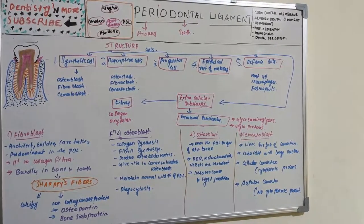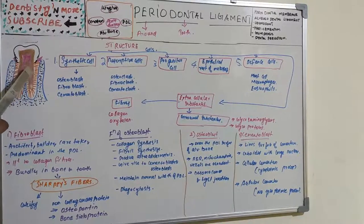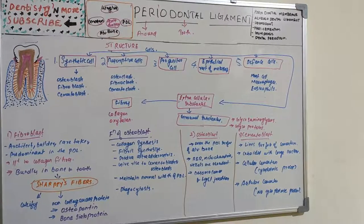Fibroblast basically originates from the cemental surface and also from the alveolar bone surface. From the cemental surface it originates from ectomesenchyme of the investing layer of dental papilla and dental follicle. Whereas on the alveolar bone side, it is originated from perivascular mesenchyme.